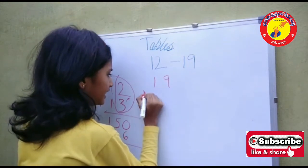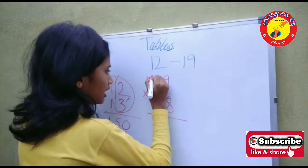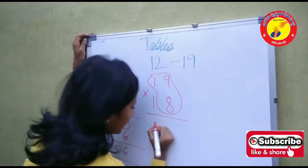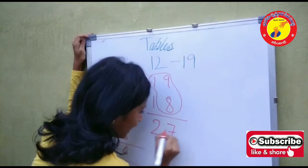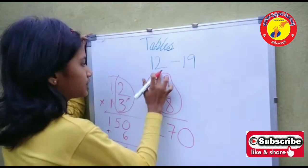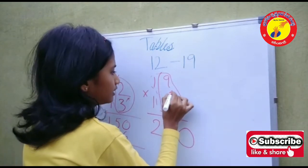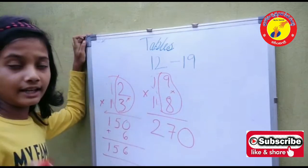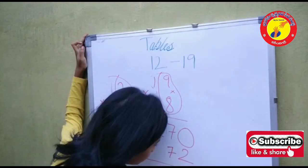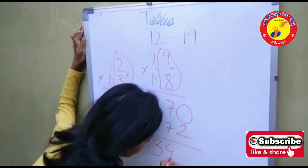Now, 19 into 18. 19 plus 8 how much? Yes, it is 27. I am taking 0 in the 1's place. Now, we should multiply 9 into 8. It is 72. So, the answer is 342.